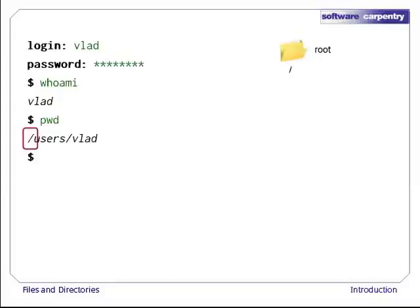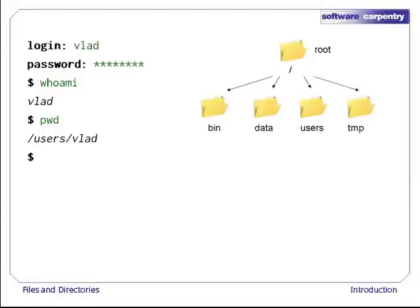Inside that directory are several other directories, such as bin, where some built-in programs are stored; data; users, where users' personal directories are located; temp, for temporary files that don't need to be stored long-term; and so on. We know that our current working directory /users/vlad is stored inside /users because /users is the first part of its name. Similarly, /users is stored inside the root directory / because its name begins with slash.